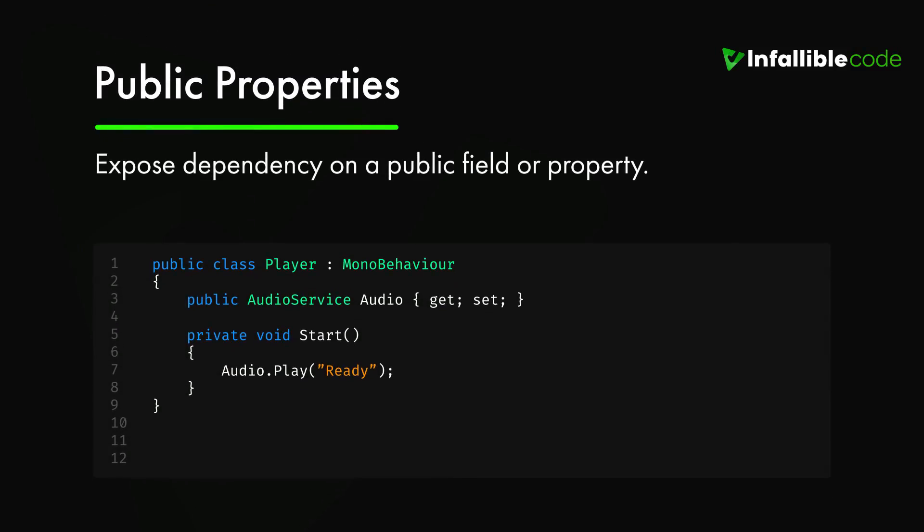The three methods of external resolution we'll be covering are public properties, editor properties, and Unity event methods. Public properties are a no-brainer — you simply expose your dependencies publicly so some other piece of code can resolve them. This is a great technique because it's simple and requires no overhead. But be careful, because code like this can often lead to bugs that are difficult to track and resolve. A collaborator causing a problem is hard to debug if it's not readily apparent where its dependencies are being resolved.